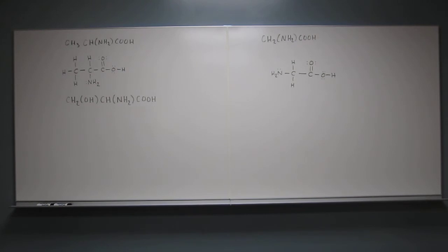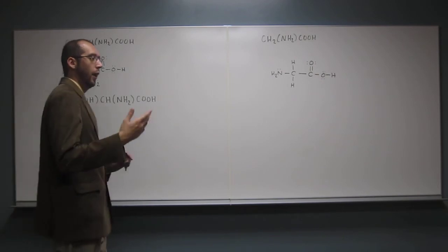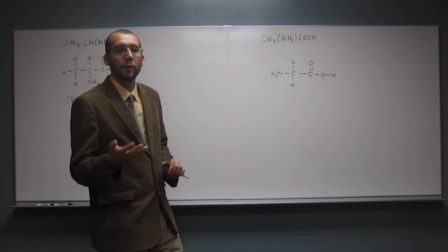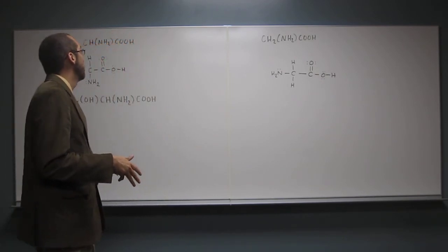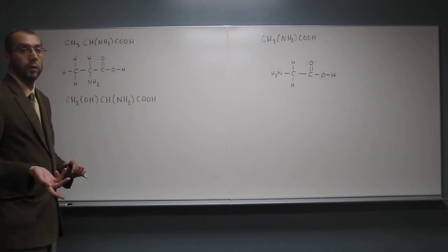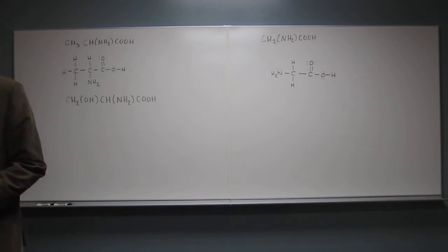And again, these condensed structures, sometimes they look weird, so you've got to be kind of careful as to what you're drawing. You want to remember, carbon wants to make four bonds, nitrogen wants to make three bonds, hydrogen wants to make one bond, oxygen wants to make two bonds.